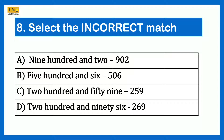Select the incorrect match. Option A 902 – 902, Option B 506 – 506, Option C 259 – 259, Option D 296 – 269. From the options we can see that the incorrect match is Option D: 296 is 296 and not 269.